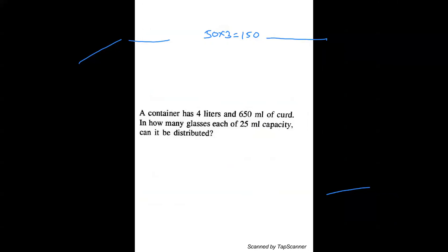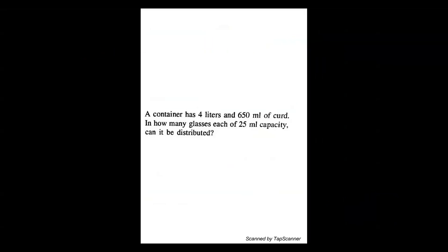Next question. First question - I am taking an important question on conversion of units. A container having 4 liter 650 ml. You can write this as 4,650. I am converting into all ml. How many glasses each 25 ml capacity can be distributed? How many glasses means it is division.